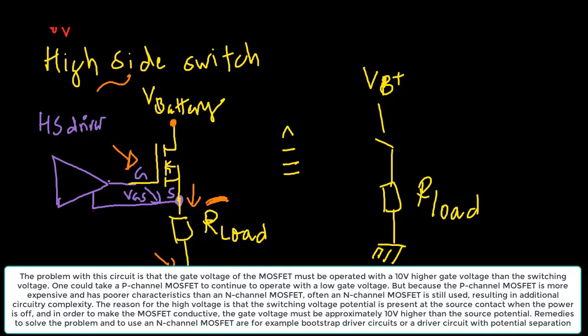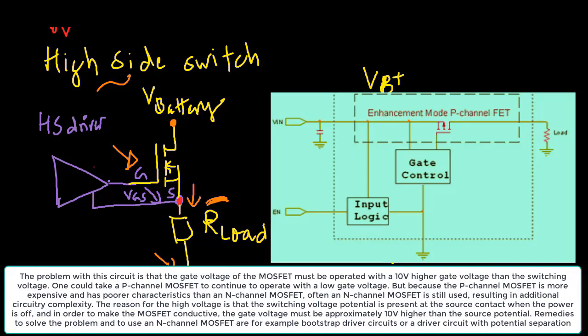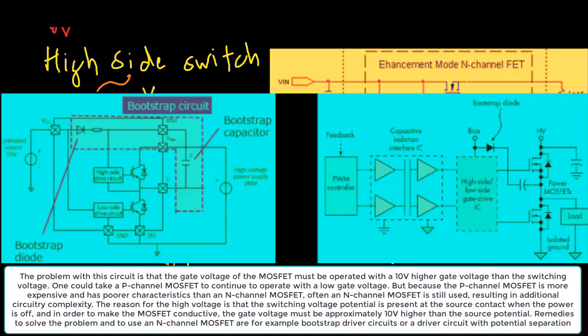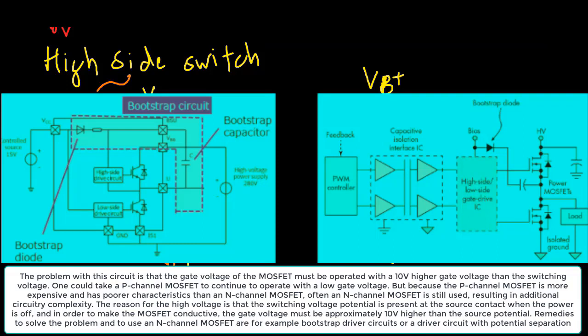The problem with this circuit is that the gate voltage of the MOSFET must be operated with a 10 volts higher gate voltage than the switching voltage. One could take a P-channel MOSFET to continue to operate with a low gate voltage, but because the P-channel MOSFET is more expensive and has poorer characteristics than an N-channel MOSFET, often an N-channel MOSFET is still used, resulting in additional circuitry complexity. The reason for the high voltage is that the switching voltage potential is present at the source contact when the power is off, and in order to make the MOSFET conductive, the gate voltage must be approximately 10 volts higher than the source potential. Remedies to solve the problem and to use an N-channel MOSFET are, for example, bootstrap driver circuits or a driver circuit with potential separation.